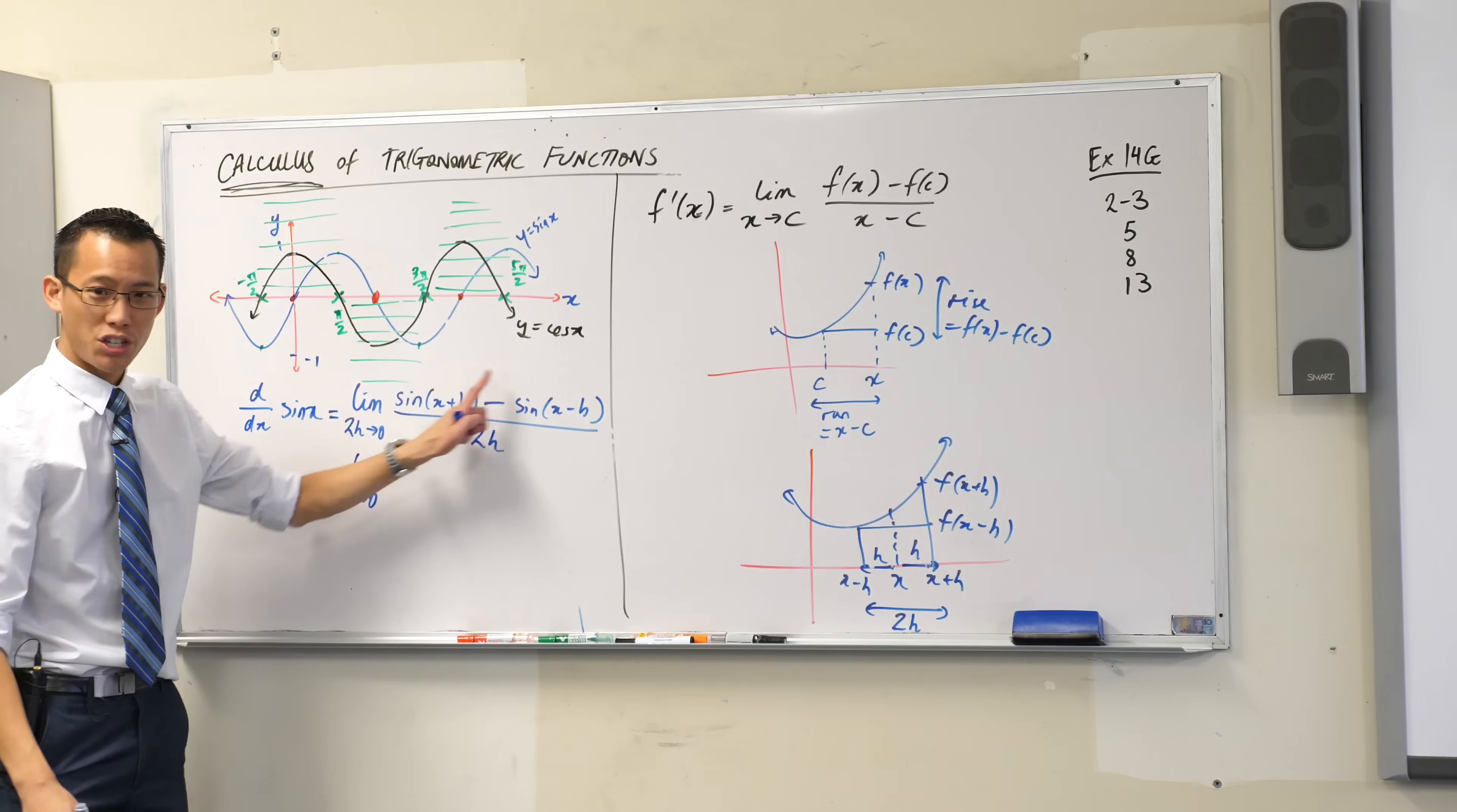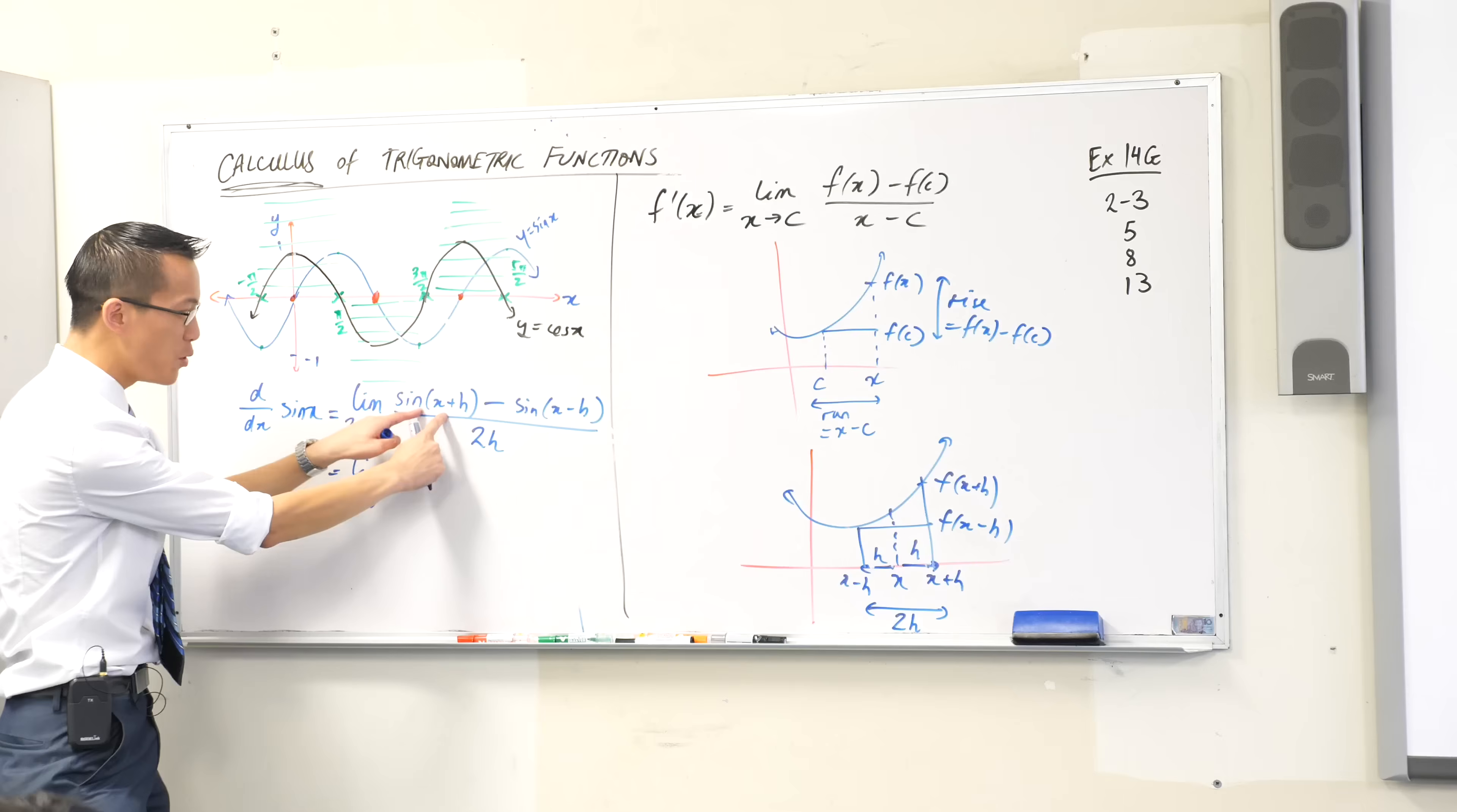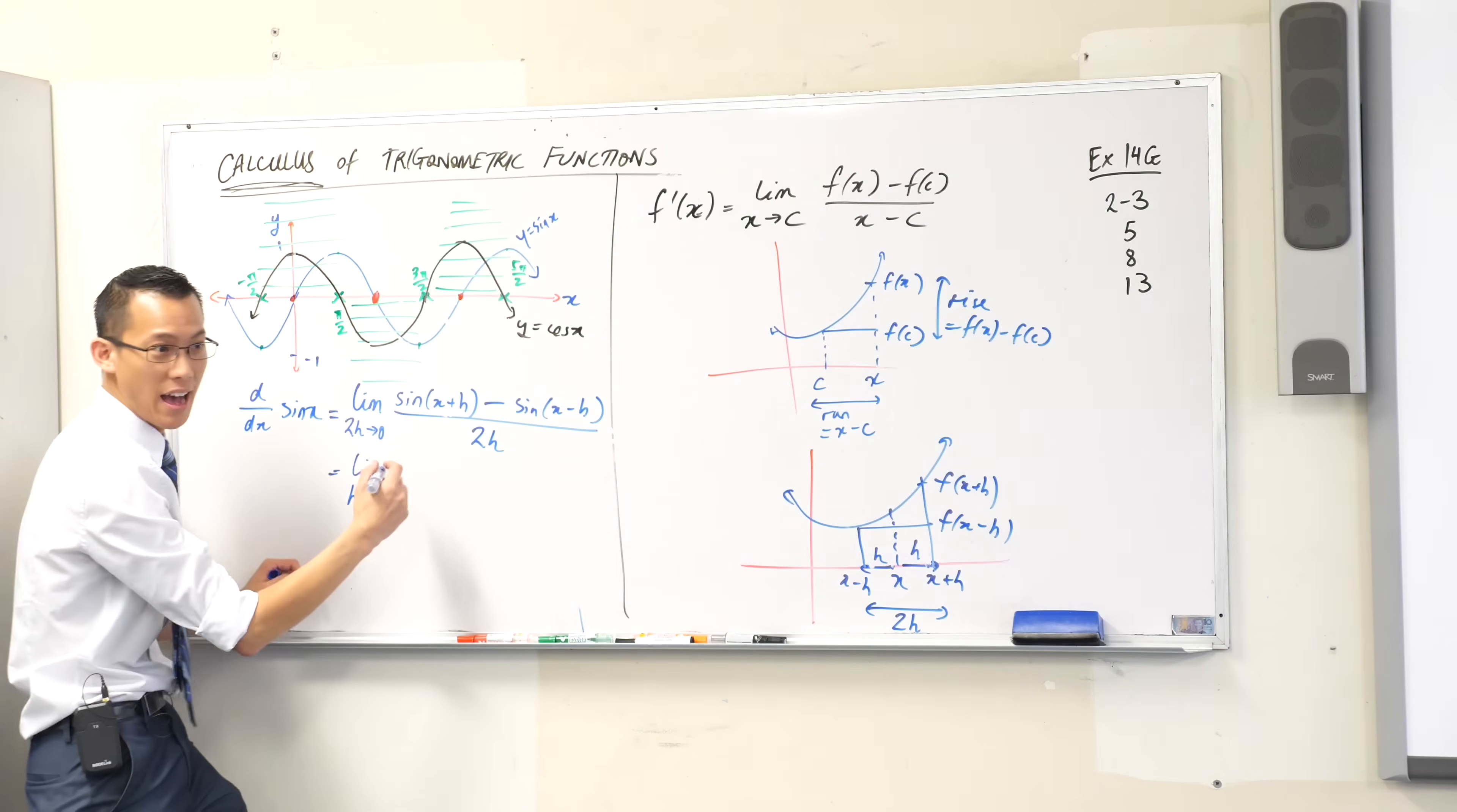If you're a two-unit student, you don't know what to do with this, because you haven't learnt anything that you can do to simplify that. But you are not two-unit students, you are extension one students. So you know you can do something with this. It's why we reviewed at the beginning of this topic before your AP3s. What do I do with this? I can expand this.